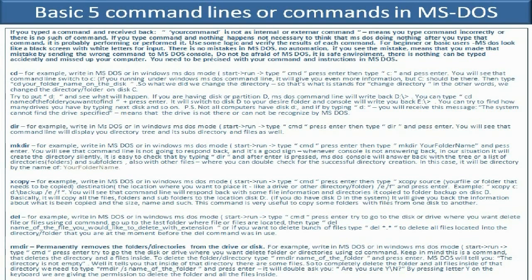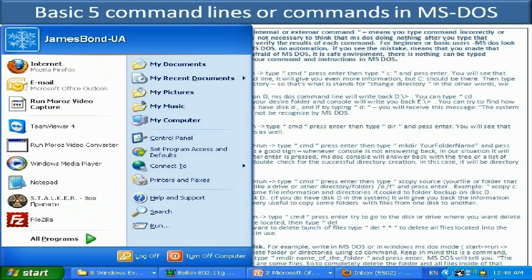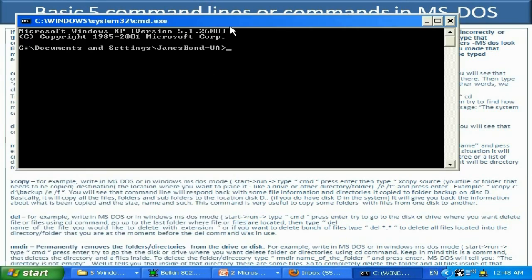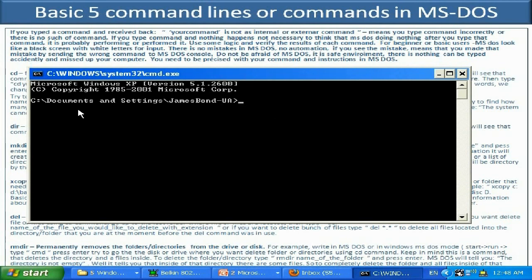To run MS-DOS, start your computer. If you have only MS-DOS it will bring you a black screen where you can type. In Windows, click the Start button, click Run, type CMD, and press Enter — it will bring up the MS-DOS console. When the cursor is blinking, it means you can type and send commands to MS-DOS.